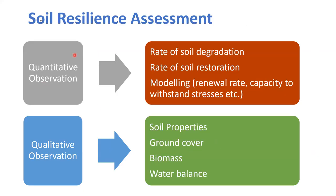Summing up, soil resilience assessment includes both quantitative and qualitative observations. Quantitative measures include rate of soil degradation, rate of soil restoration, modeling, renewal rate capacity, and the capacity to withstand stresses — these can be quantified. Qualitative soil properties include ground cover, biomass, and water balance — these can be seen and observed even if they cannot be precisely quantified. It is a combination of various soil characteristics.